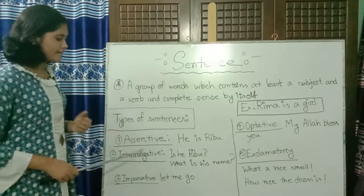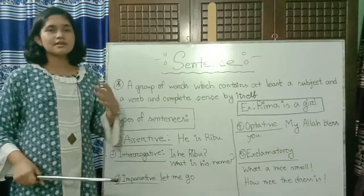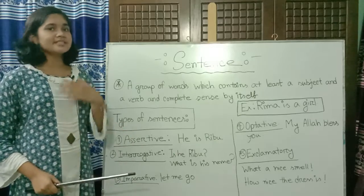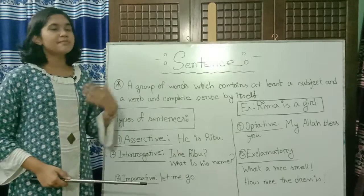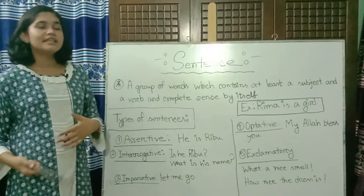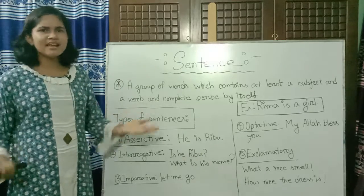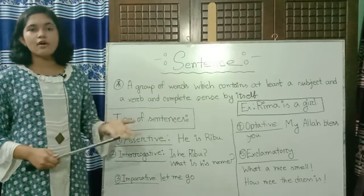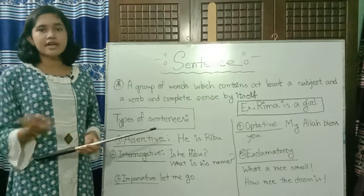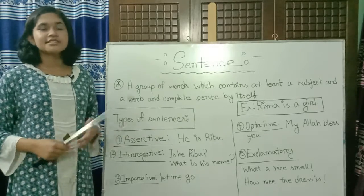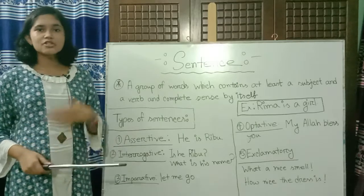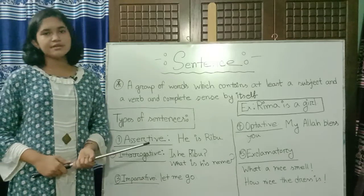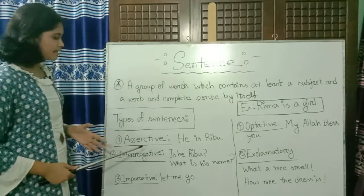Next is the imperative sentence. Examples include: 'Let me go,' 'Let me play,' 'Let me sleep,' 'Let me dance.' We can also say 'Go there,' 'Come back,' 'Come here,' 'Stand up,' 'Sit down.' These are instruction sentences — any sentence giving an instruction is an imperative sentence.